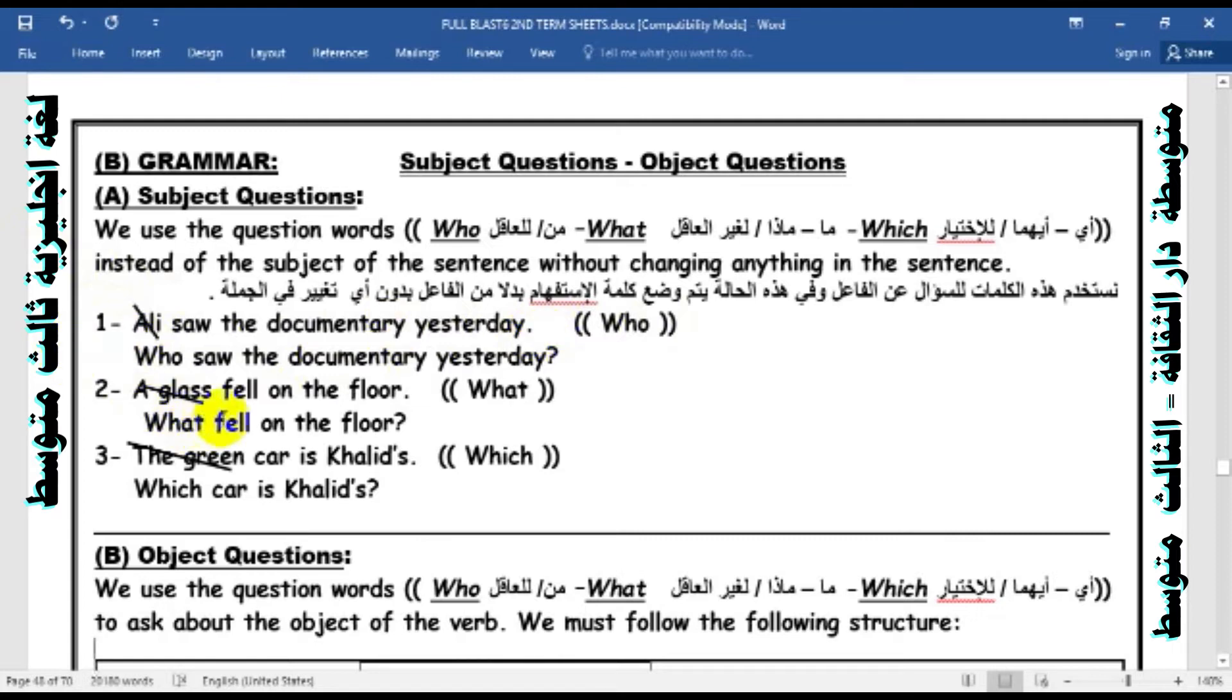Number two: A glass fell on the floor. Ask a wh-question by using what. Yes. What fell on the floor?